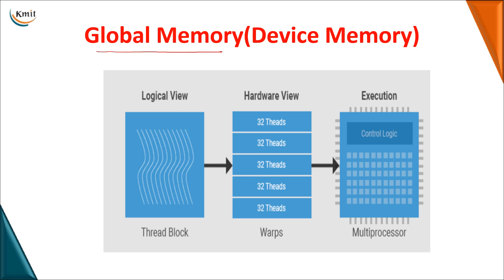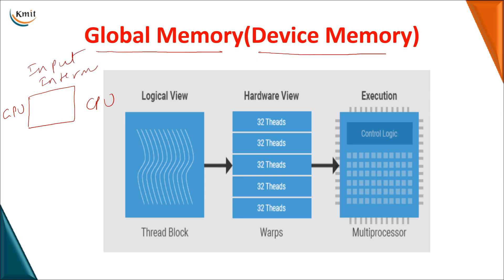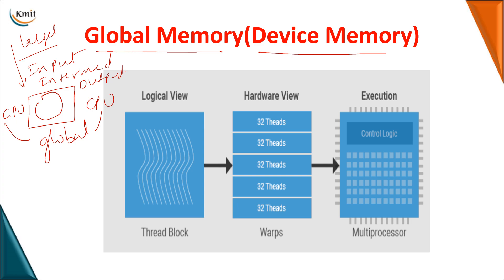The first type of memory is global memory, also called device memory. Global memory acts as a communication channel between the GPU and the CPU. All input data, intermediate operations, and result output values are dumped onto global memory, so the data can be used by both the CPU and the GPU. A large set of data can be stored in global memory.